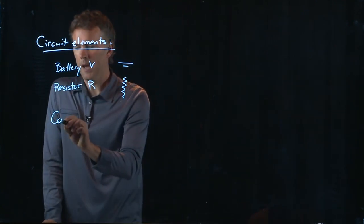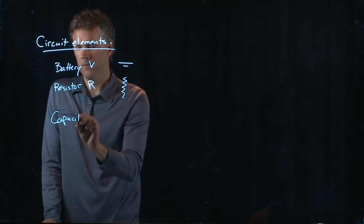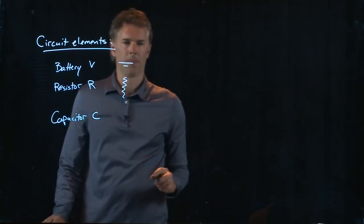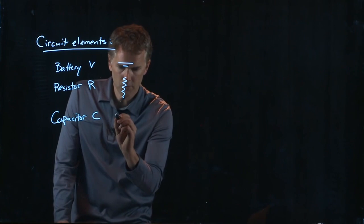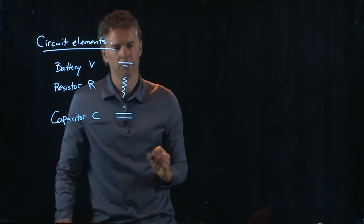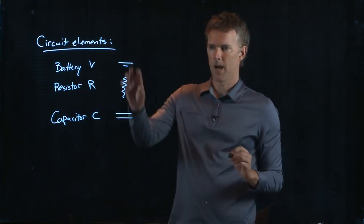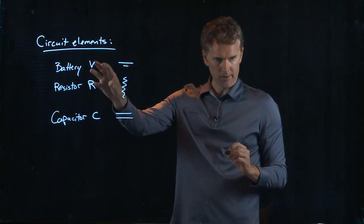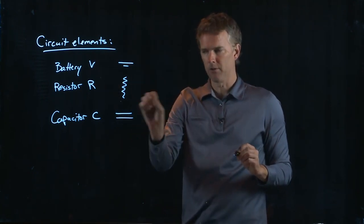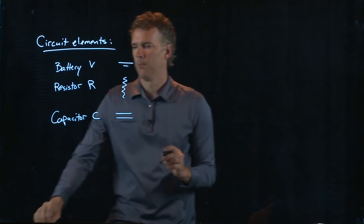There is a capacitor C. A capacitor is two parallel lines. Okay, not a long line and short line. That's a battery. A capacitor is two long parallel lines.